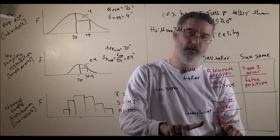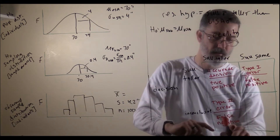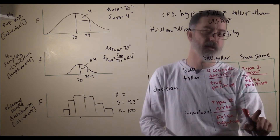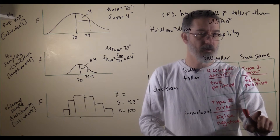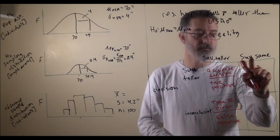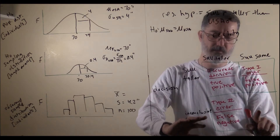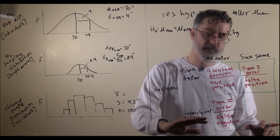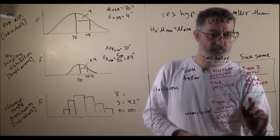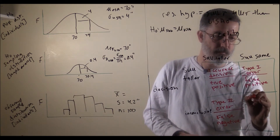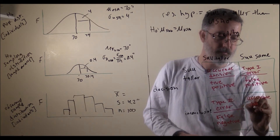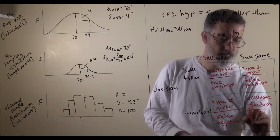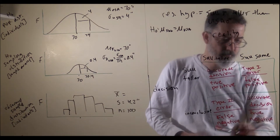A negative refers to failing to reject the null hypothesis — thinking you have not found anything about the world. The last possible scenario is that the null hypothesis is true, and your results are such that you cannot reject it, so you make the appropriate decision to fail to reject and conclude your results are inconclusive. This is an accurate decision — a true negative.